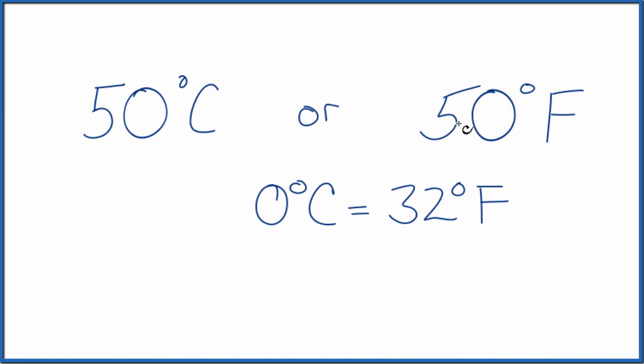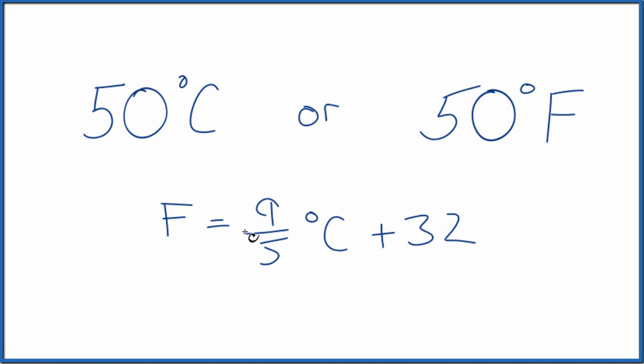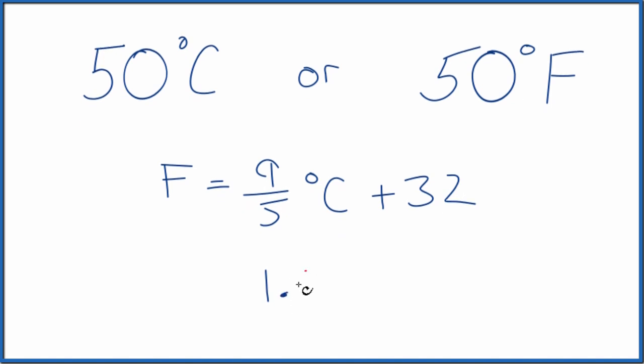If we convert degrees Celsius to Fahrenheit, then we just compare and see which one's higher. So Fahrenheit equals nine-fifths degrees Celsius plus 32. Nine-fifths is just 1.8. Multiply that by our degrees Celsius, 50, plus 32.